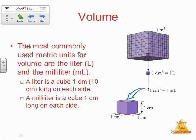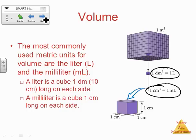Volume is a measure of the amount of space that something takes up, and the most common unit for that is going to be the liter or the milliliter. Just so you're familiar where that comes from: the milliliter is a 1 cm × 1 cm × 1 cm cube. So a cubic centimeter equals a milliliter. And if you take a decimeter by a decimeter by a decimeter, that gives you a liter.